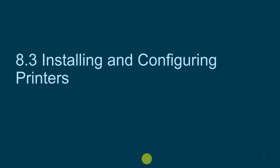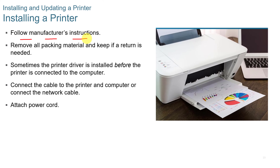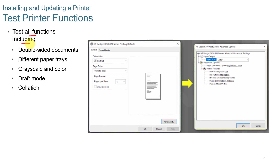Installing and configuring printers. You want to follow the manufacturer's instructions for installing a printer. Remove all the packaging material and keep it in case there's a return needed. Sometimes the printer driver is installed before the printer is connected to the computer. Connect the cable to the printer and computer, or connect the network cable, then attach the power cord. You then want to test all functions including double-sided documents, different paper trays, grayscale and color, draft mode, and collation. Make sure the printer is in proper working order before you leave it with the customer.